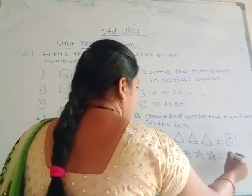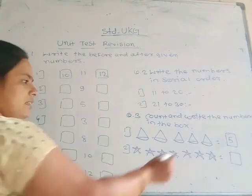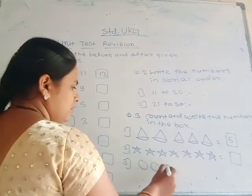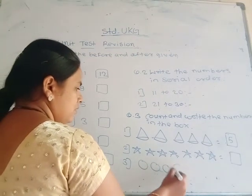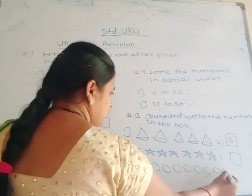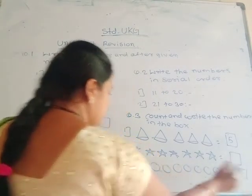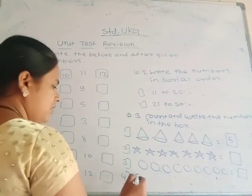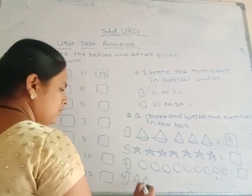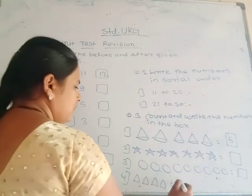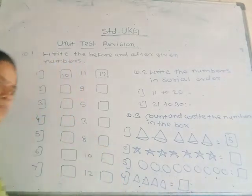You count the stars and write in the box. Come with me: 1, 2, 3, 4, 5.